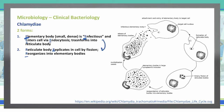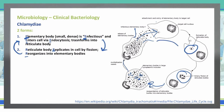Looking at this picture more closely: starting at the top, the elementary body enters the target cell, transforms into a reticulate body, and undergoes binary fission to create more reticulate bodies, which then reorganize into elementary bodies. The large forms in the middle break down into the small ones on the outside. The cell fills with elementary bodies that release themselves, go on into other cells, and continue that replication cycle over and over.